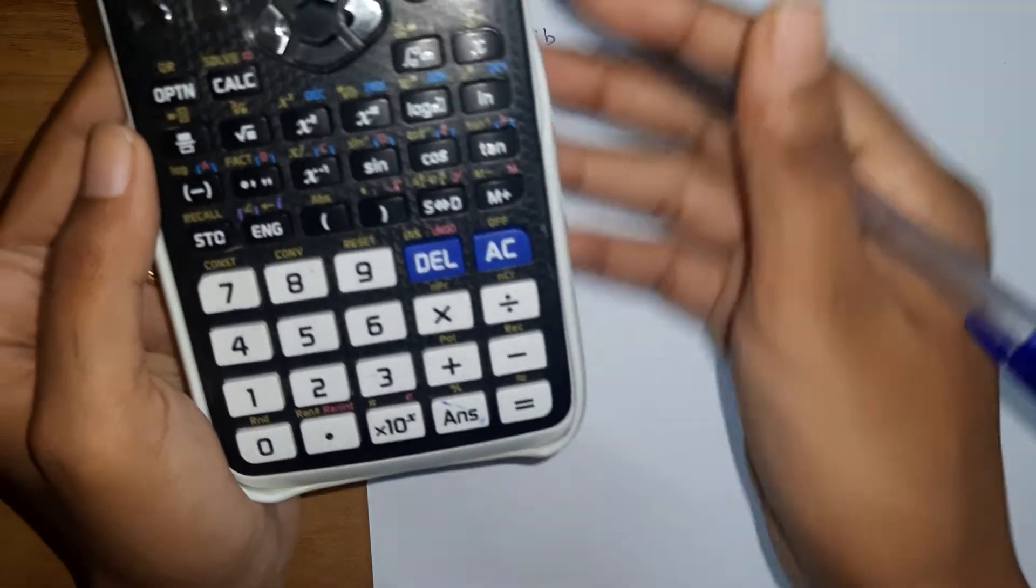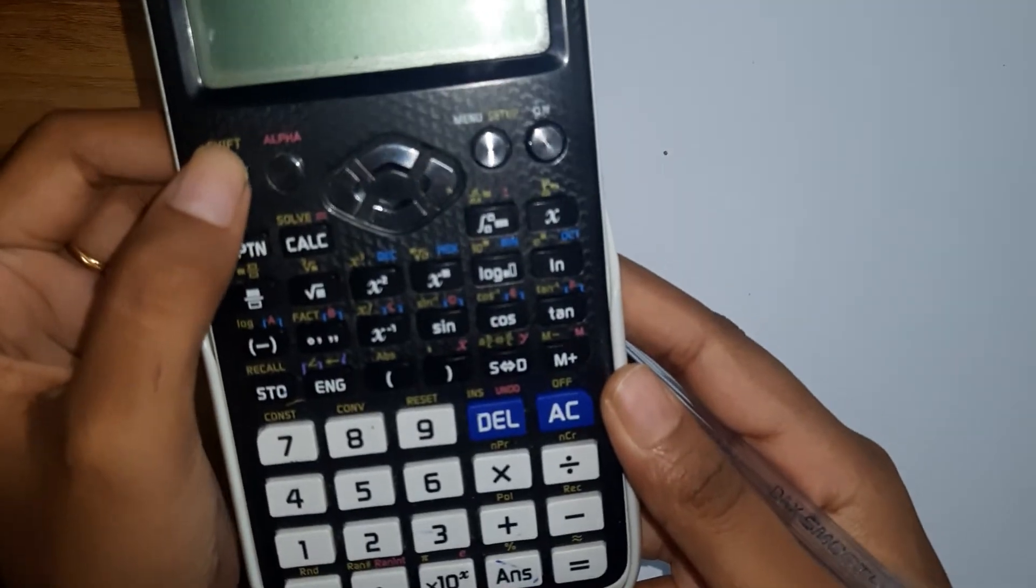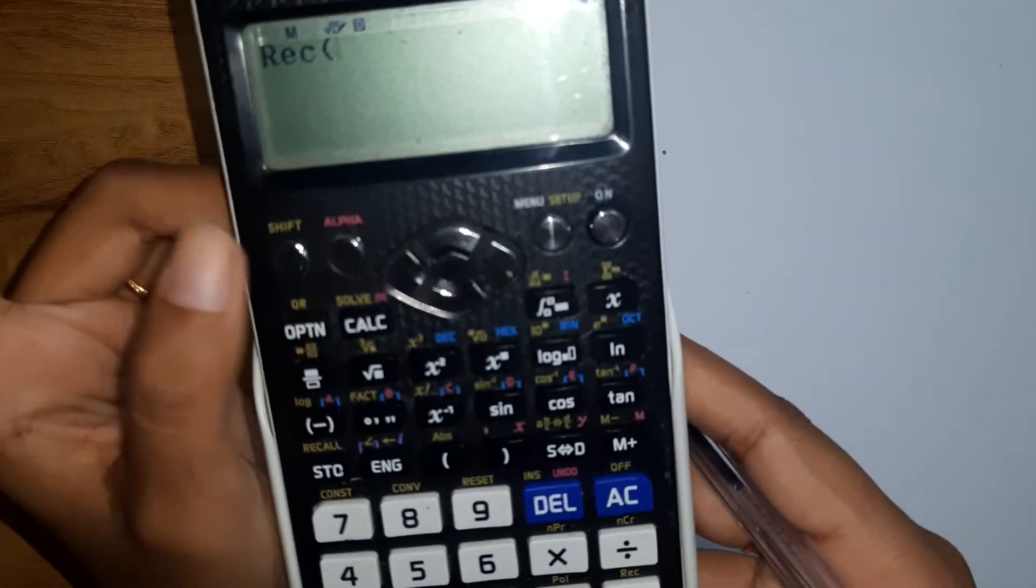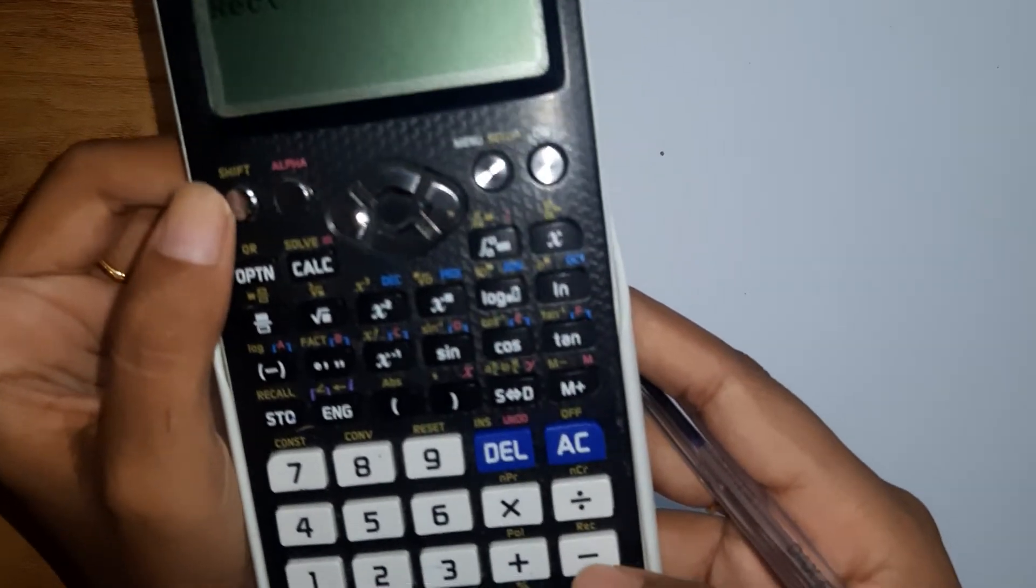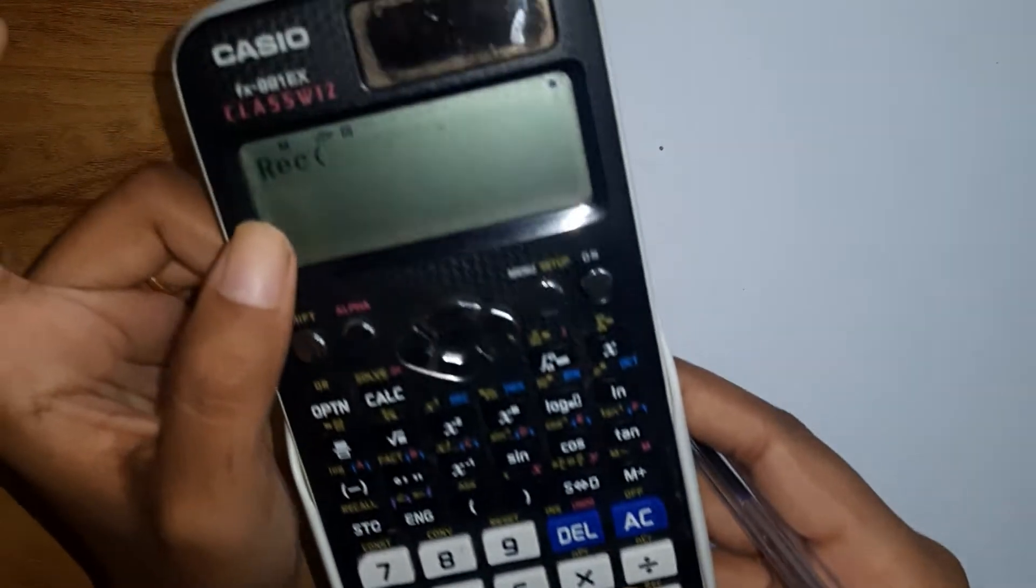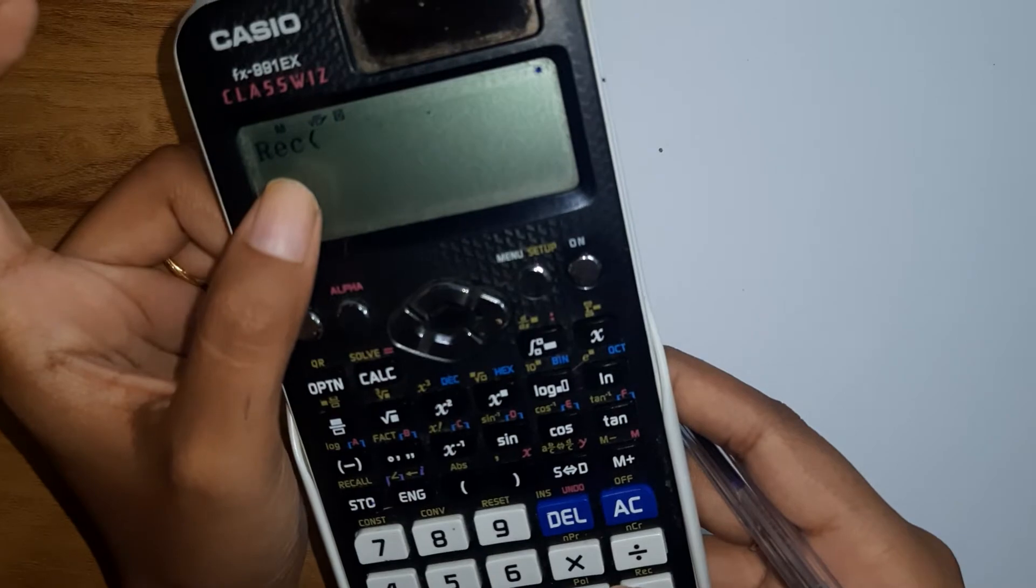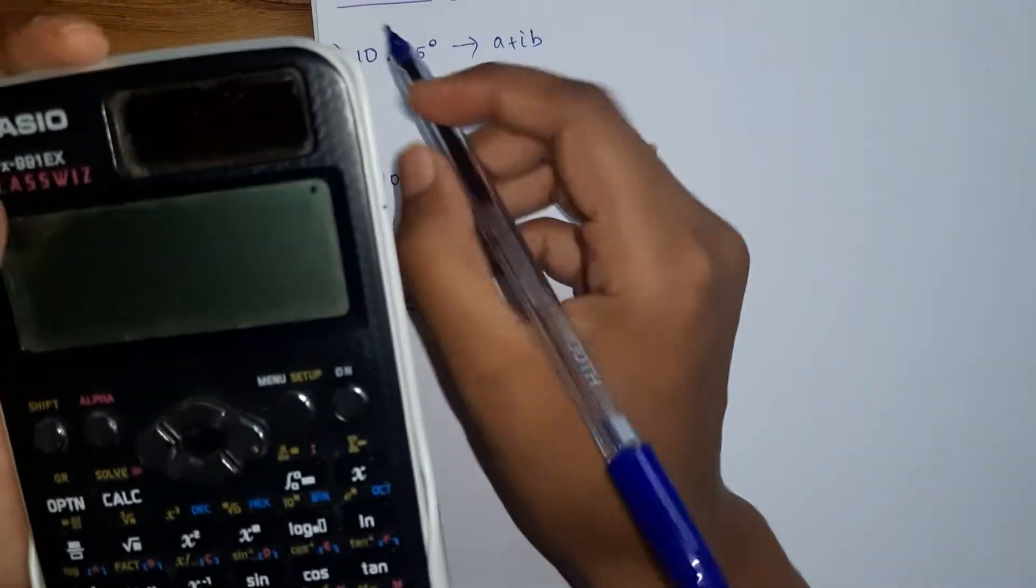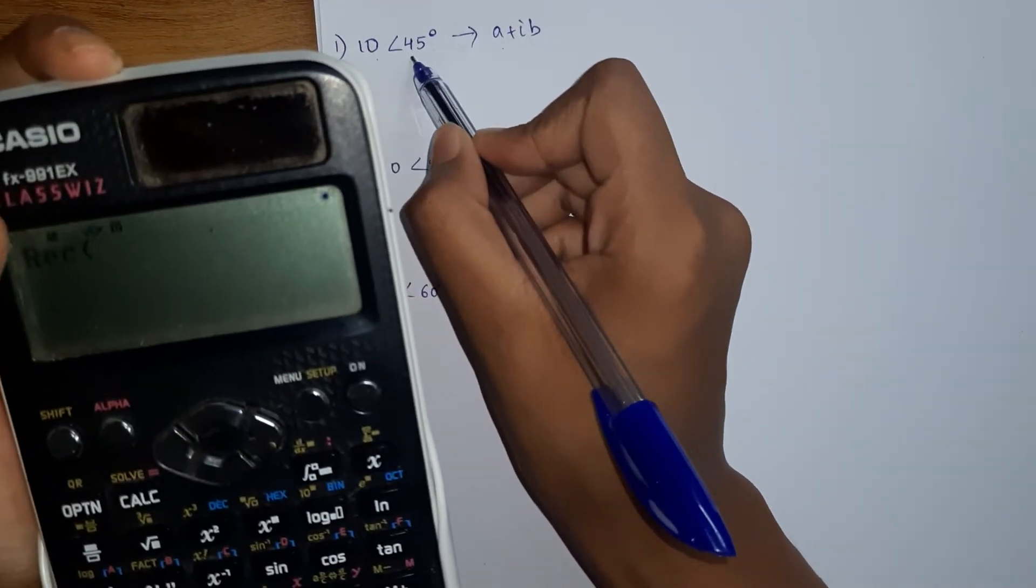So first click shift, and then click on rect. You will get this. So then what are the numbers? 10, and here angle is 45 degrees, right?